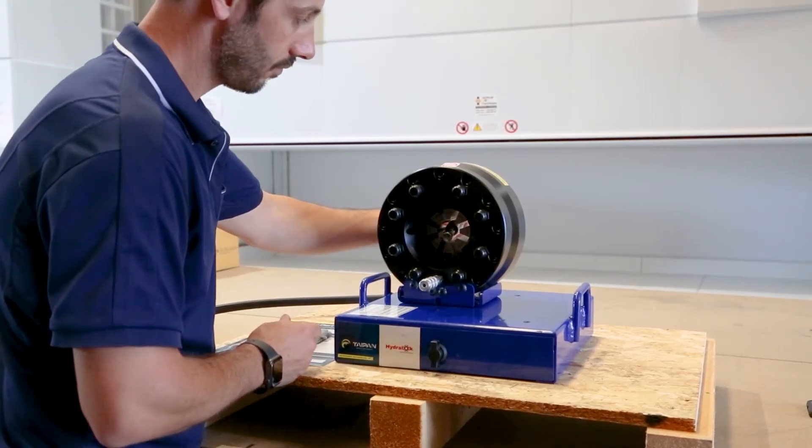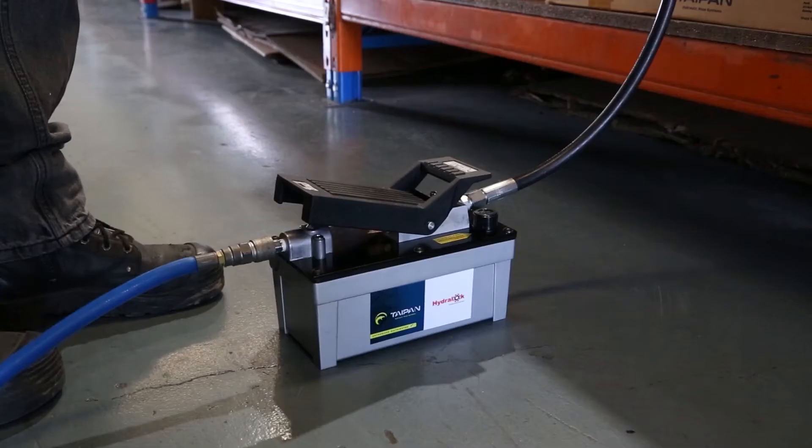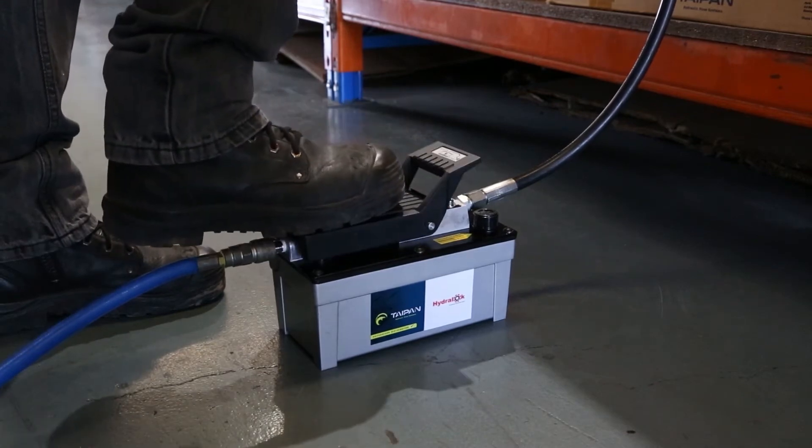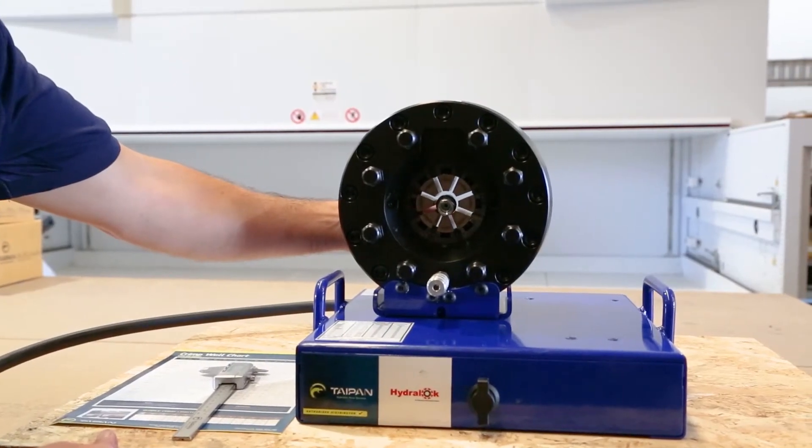Insert hose into rear of the crimper head. When you apply pressure to the foot pump, the die carriers will begin to close.